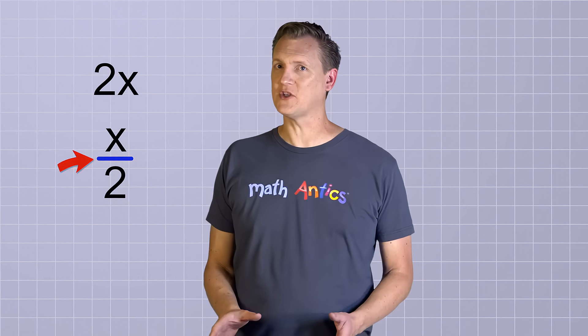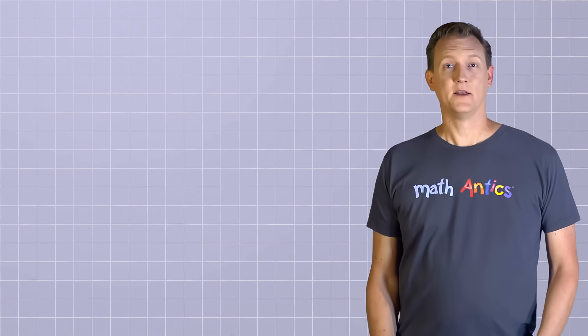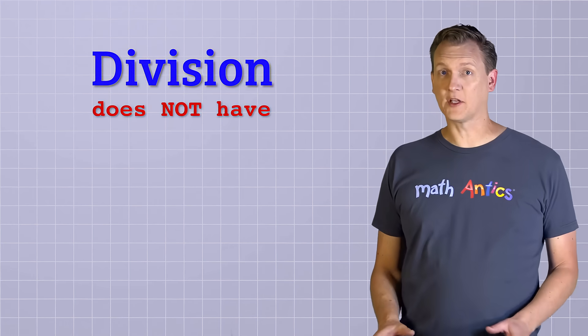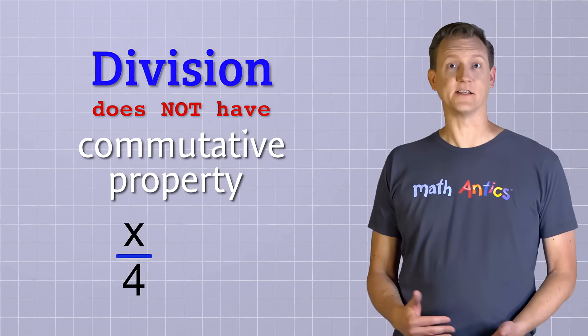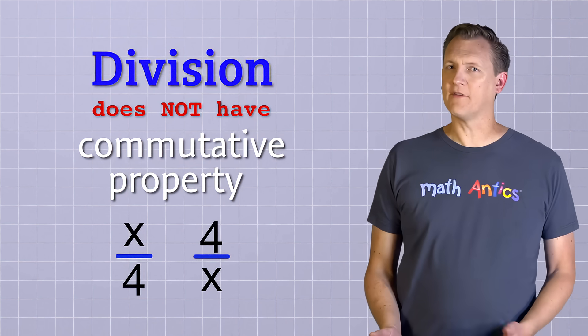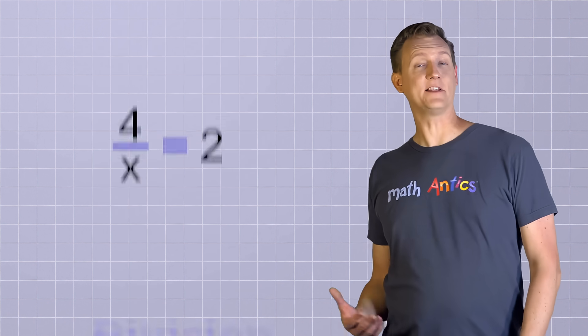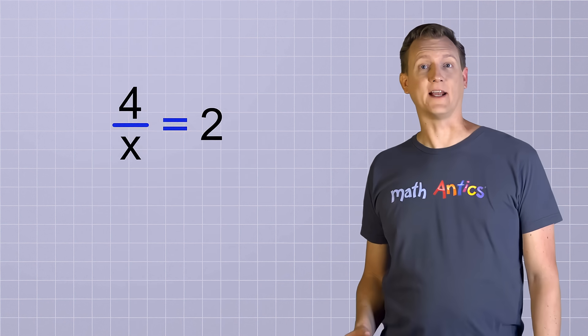Great! That's how you solve simple equations where an unknown is being multiplied by a number or divided by a number. But just like with subtraction in the last video, with division, there's a tricky variation that I need to tell you about. What if you have an equation where a number is being divided by an unknown? Since division does not have the commutative property, x over 4 is not the same thing as 4 over x. So what do we do if the unknown is on the bottom, like in this problem: 4 over x equals 2.